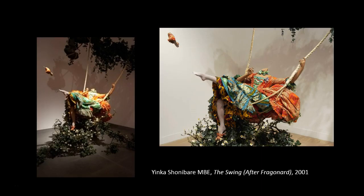You should be familiar with this work by Yinka Shonibare. This is part of our lecture series on contemporary art. There are a lot of interesting things going on in this installation sculpture piece, and hopefully it reminded you instantly of an earlier work we looked at called The Swing by Fragonard, a French Rococo painter. This is a very good example of an artist deliberately referencing another work of art and the implications involved in that.